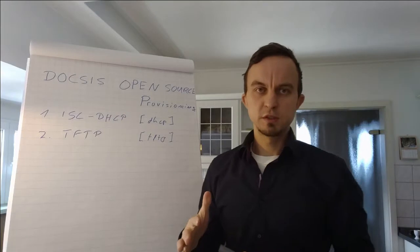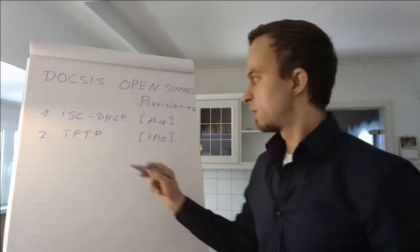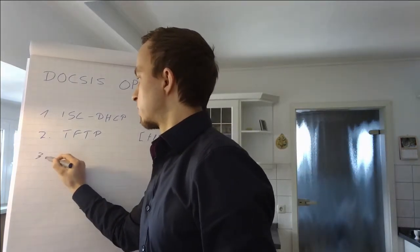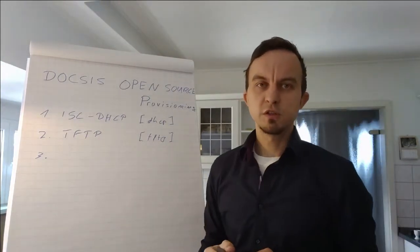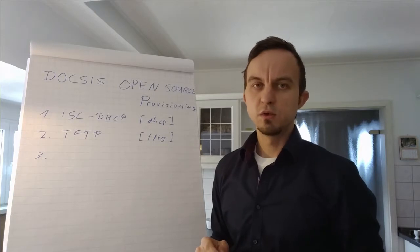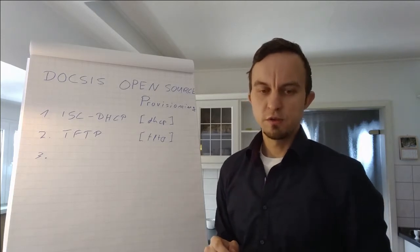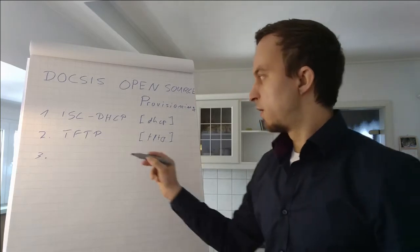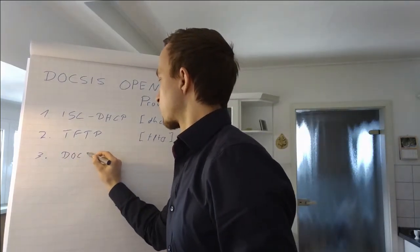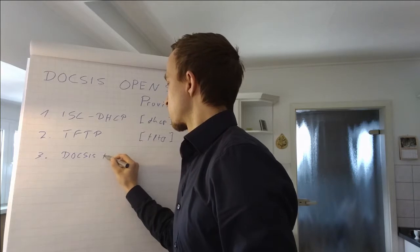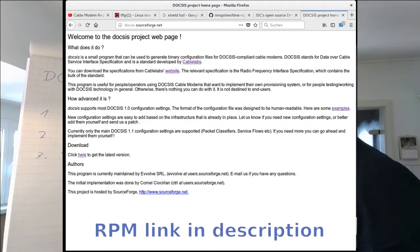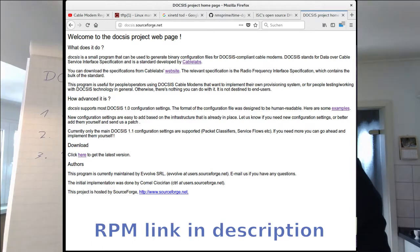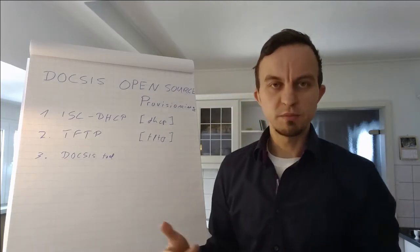The third one is not as common or as popular and is not available in the Linux standard distribution. It's called DOCSIS tool, which is hosted at sourceforge.net. The DOCSIS tool can be used to create your own config files. I will put the link in the description of the DOCSIS tool.